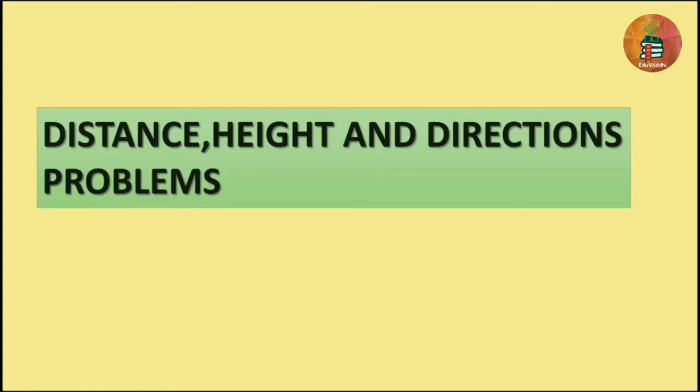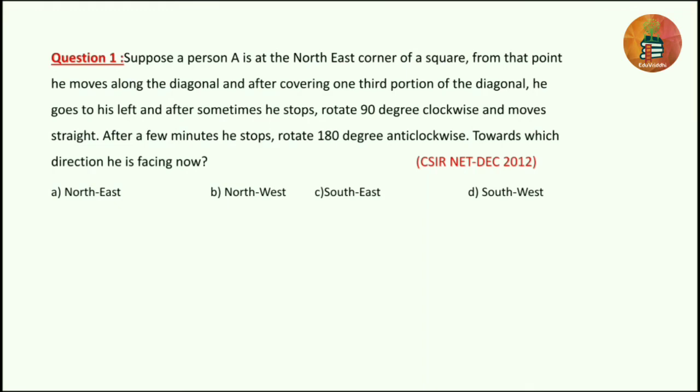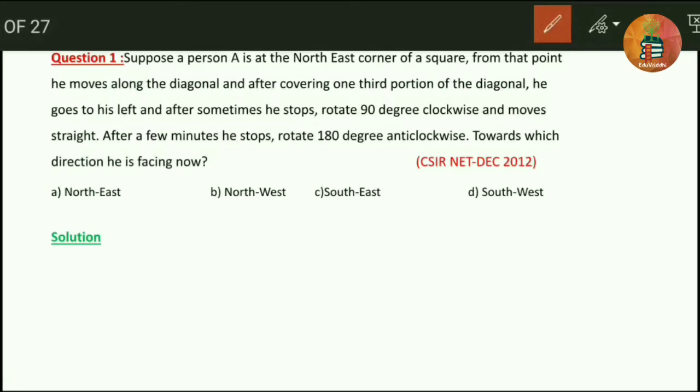Next let us see problems related to distance, height and directions. The first question: suppose a person A is at the northeast corner of a square. From that point he moves along the diagonal. After covering one third portion of the diagonal, he goes to his left. After some time he stops, rotates 90 degrees clockwise and moves straight. After a few minutes he stops, then rotates 180 degrees anti-clockwise. Towards which direction is he facing now?